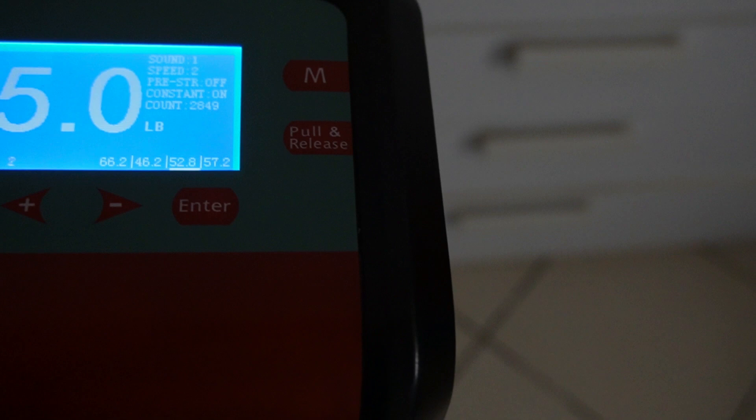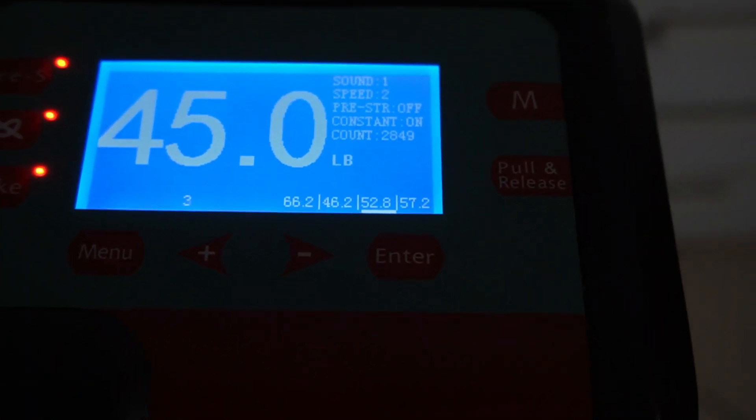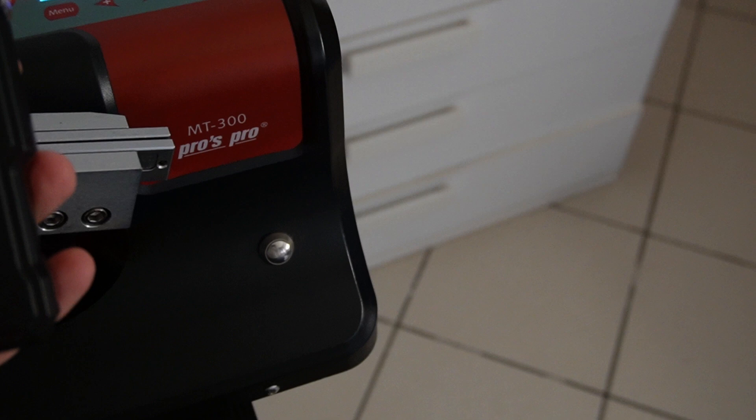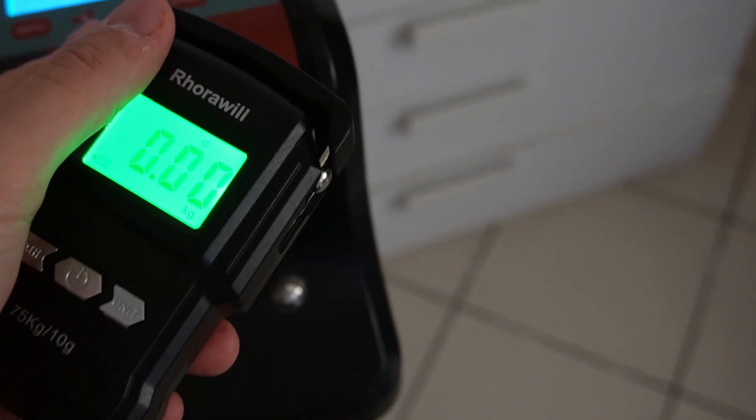When the machine is in calibration mode it will show 45 pounds. Now using an electronic dynamometer we need to check if the value pulled is the same.